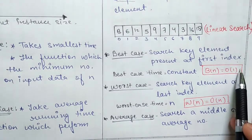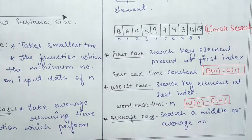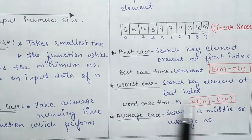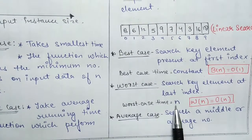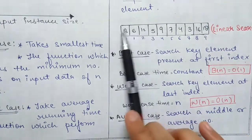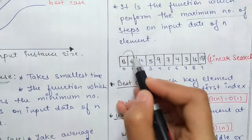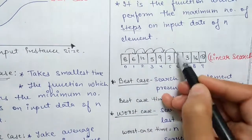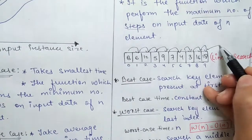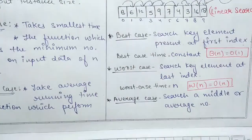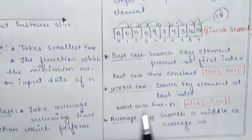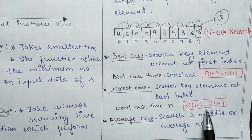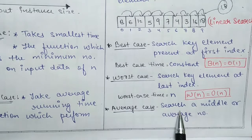Best case is constant time: B(n) = O(1). O(1) is our asymptotic notation and the constant denotes best case. Now for worst case: the search element is at the last index, so we must traverse the entire array — 0, 1, 2, 3 ... all the way to index 9 which holds 18. This is the worst case time: W(n) = O(n).